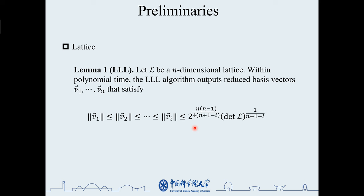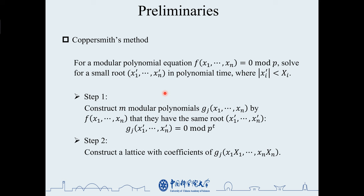The last is about the Coppersmith method, which is a method used to solve the small root problem of modular polynomial equations where the upper case Xi denotes the bound of the root. The Coppersmith method is divided into four main steps.